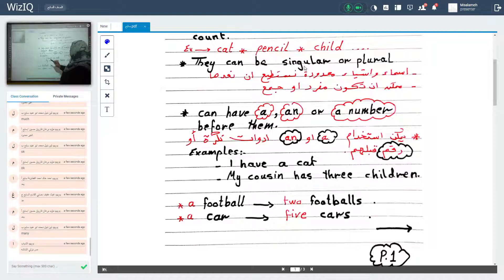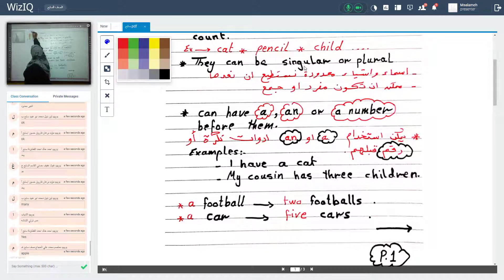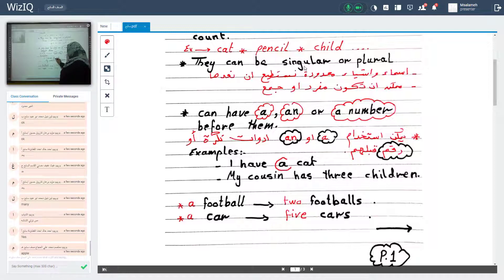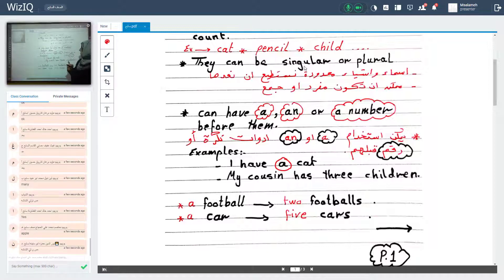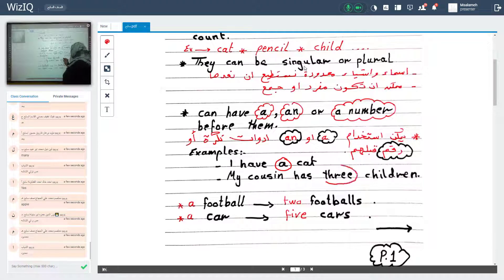I'm a student. I have a cat. Here we use... My cousin has three... Here we have a number here. Three children. Three children. Is it clear?